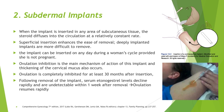The implant can be inserted on any day during a woman's cycle provided she is not pregnant. Ovulation inhibition is the main mechanism of action, and thickening of the cervical mucus also occurs. Ovulation is completely inhibited for at least 30 months after insertion. Following removal, serum etonogestrel levels decline rapidly and are undetectable within one week, so ovulation resumes rapidly post-removal.